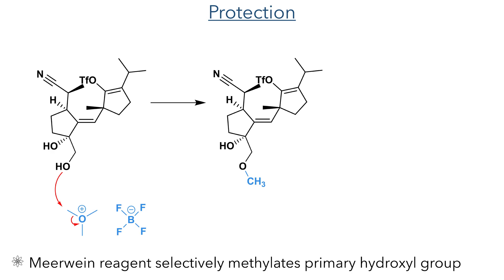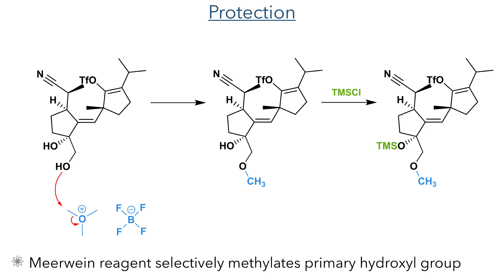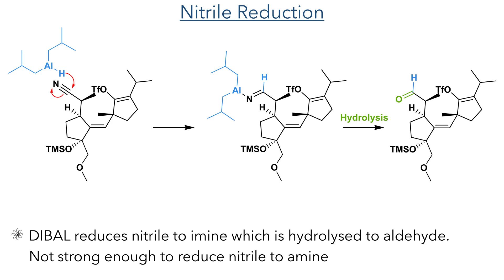These two hydroxyl groups were then orthogonally protected. The first was as a methyl ether, installed using the Meerwein reagent, which was selective for the primary hydroxyl group, which is more nucleophilic as it is less sterically hindered. With this installed, the compound was then reacted with TMS chloride to silylate the tertiary hydroxyl group. At this stage the authors reduced the nitrile group to reveal an aldehyde, done using DIBAL-H. The addition of the hydride to the nitrile generates an imine-type compound which upon hydrolysis forms the aldehyde.